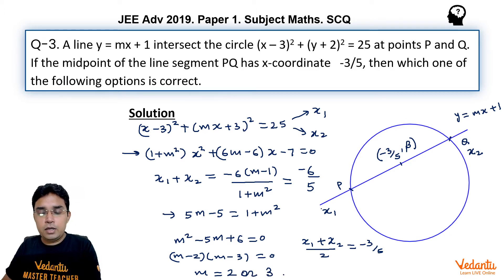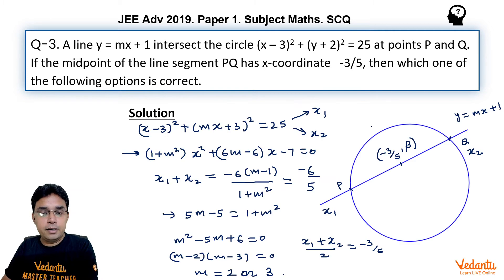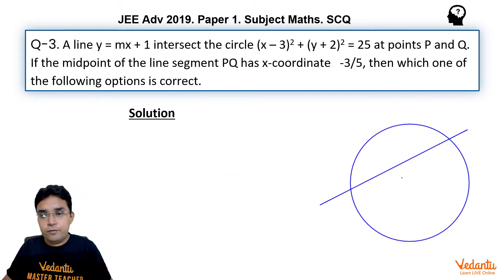Let us see what are the options. So m equals 2 or 3, I think only correct option is B. A is wrong, C is wrong, D is wrong, B is correct. So only correct option is B. So that is one method. I will tell you one more method for this question.